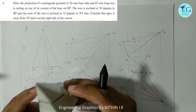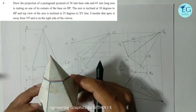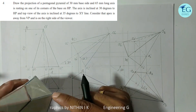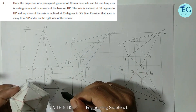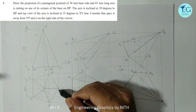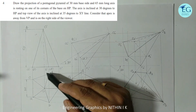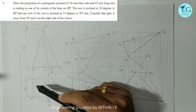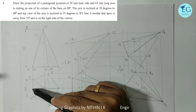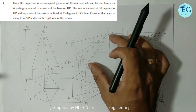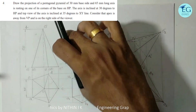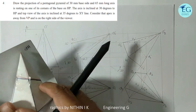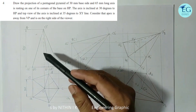The pentagonal pyramid is resting on a corner on HP. The corner on the right side contains edges equally inclined to this line. For the initial stage: top view is a pentagon and front view is a triangle.